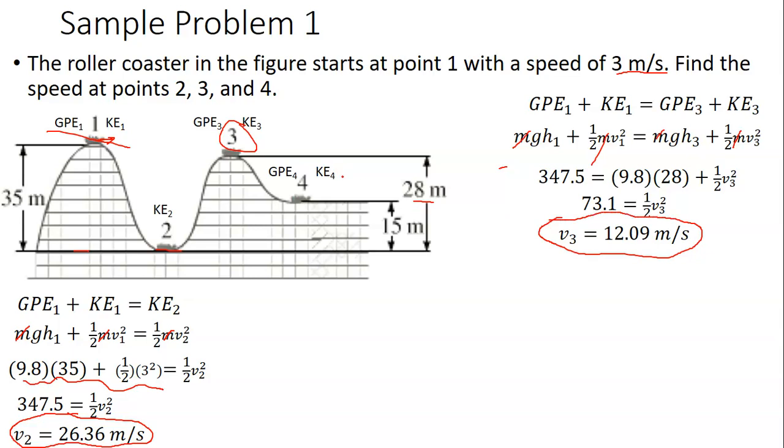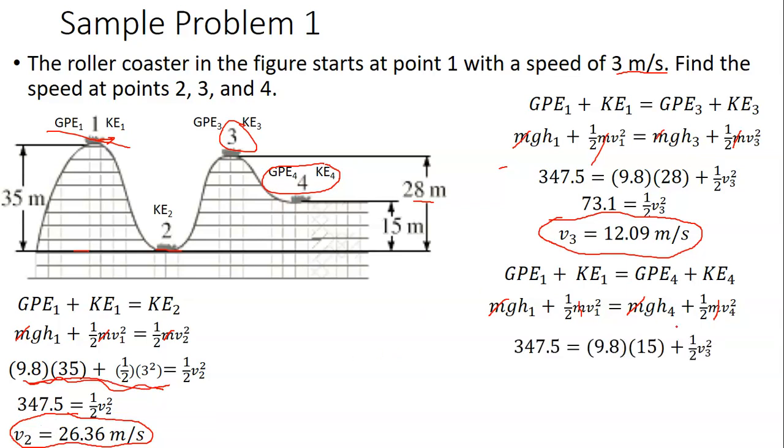Lastly, we're just going to do the same thing for position 4. I'm going to say that point 1 is my initial position or my initial scenario. GPE₁ plus KE₁ equals GPE₄ plus KE₄. Now I can plug in the formulas. Again, the masses cancel. I know that once I plug this stuff in, on the left-hand side, I will get 347.5. Plug in numbers on the right-hand side. g is 9.8, h₄ is 15, and then I'm looking for v₄. If I do 9.8 times 15 and subtract that from both sides, I get 200.5 equals ½v₃². If I solve that, I get v₄ is equal to 20.02 meters per second.